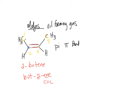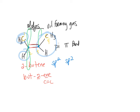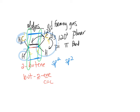Each sp2 carbon has one unhybridized p orbital above and below the plane, and the substituents are 120 degrees from each other — it's planar. The pi bond electrons reside in those unhybridized p orbitals. There are nice slides and pictures in your book illustrating this structure.